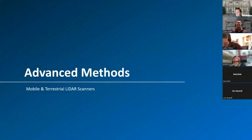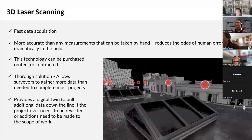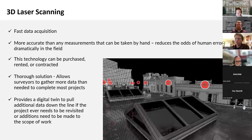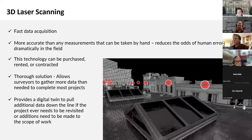We're going to move into the advanced section where we'll cover mobile and terrestrial LiDAR scanners. Updating or replacing a proven method to utilize the newest technology isn't an easy decision in any industry. Even though it may be difficult to transition, making the change to laser scanning as a survey method provides fast data acquisition, is more accurate than any measurement taken by hand, and dramatically reduces the odds of human error in the field. This technology can be purchased, rented, or contracted — different levels of investment — and it's a thorough solution that allows surveyors to gather more data than is actually needed for most as-built projects.